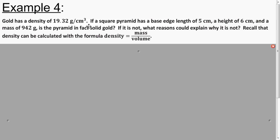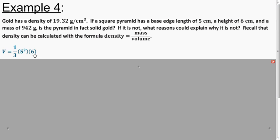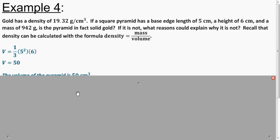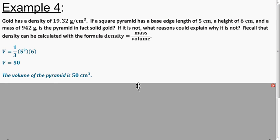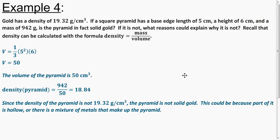Here's a density problem. They give us the true density of gold, and we want to figure out if the pyramid we have is solid gold. We know the mass already — we've got to find the volume. The volume is one-third the area of the base times the height, giving a volume of 50 cubic centimeters. We divide the mass by the volume and get 18.84. The density is not 19.32 grams per cubic centimeter, so it's not solid gold. It could be a little bit hollow or a mixture of different metals, but it's 100% not entirely solid gold.